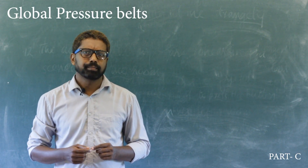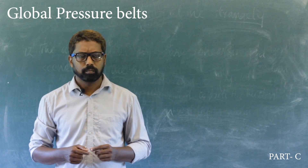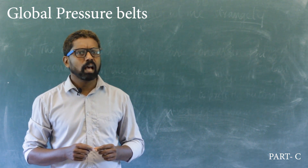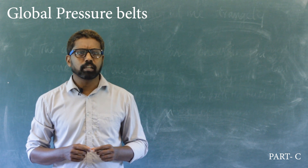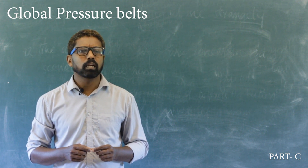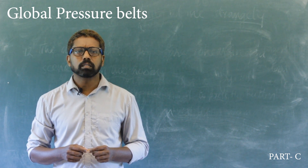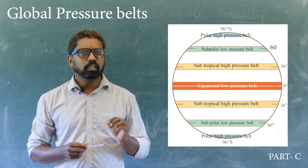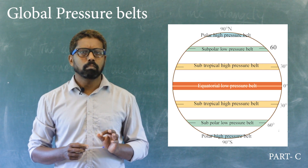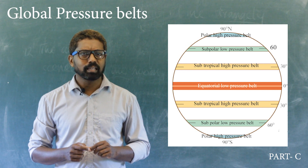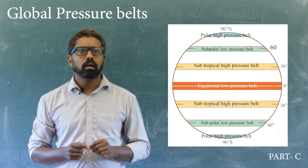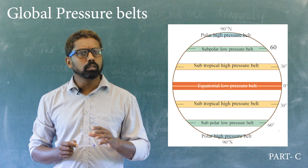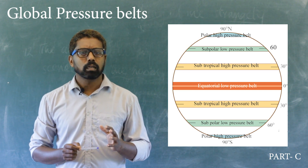Next, very important content: Global Pressure Belts. Studies have revealed that the atmospheric pressure is more or less the same between certain latitudes. Based on this, the earth's surface is divided into different pressure belts. These are known as the Global Pressure Belts.